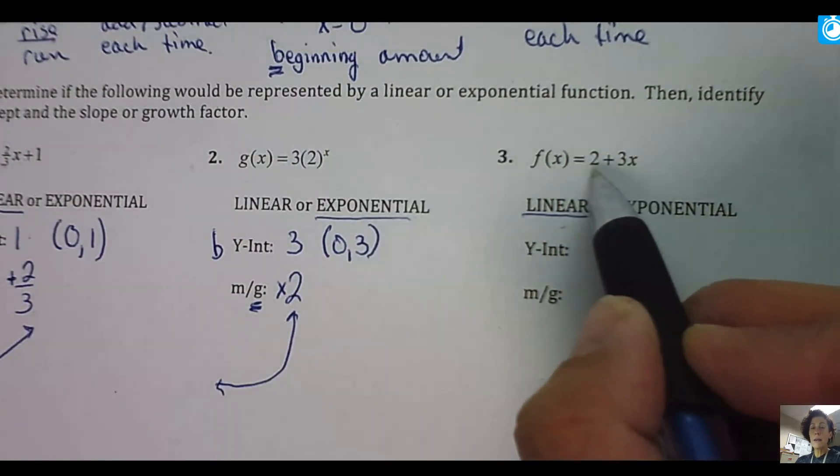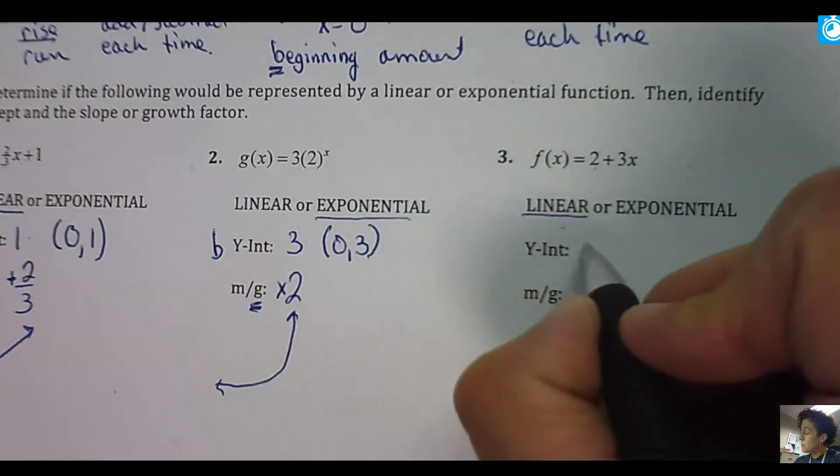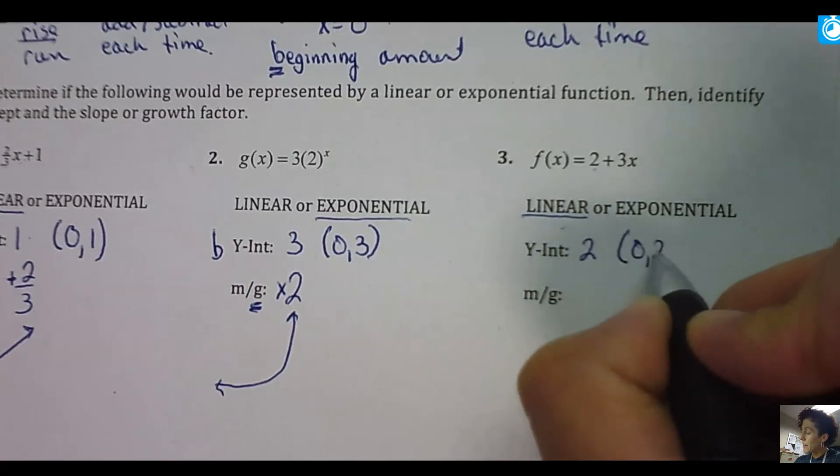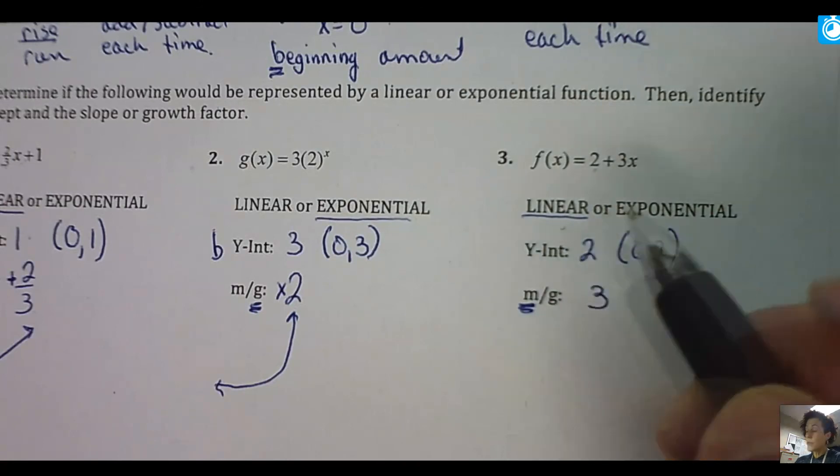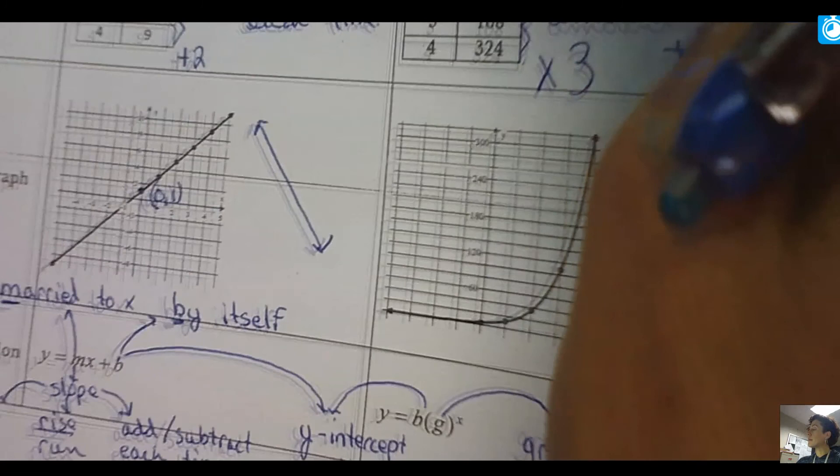This is linear. So what's the number that's by itself is the two. But we like to write it as the ordered pair. And the number that's married to X is three. So if I begin with two and then I add three every time, I'm going to get this uphill line.